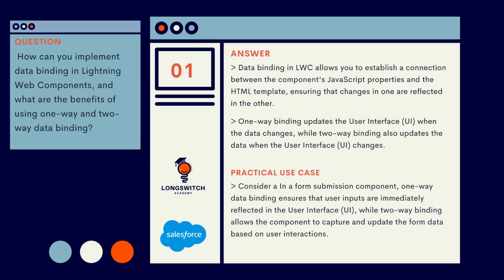Data binding in LWC allows you to establish a connection between the component's JavaScript properties and the HTML template, ensuring that changes in one are reflected in the other. One-way binding updates the user interface when the data changes, while two-way binding also updates the data when the user interface changes. Consider a form submission component: one-way data binding ensures that user inputs are immediately reflected in the UI, while two-way binding allows the component to capture and update form data based on user interactions.